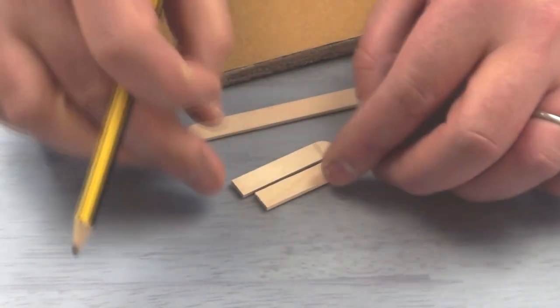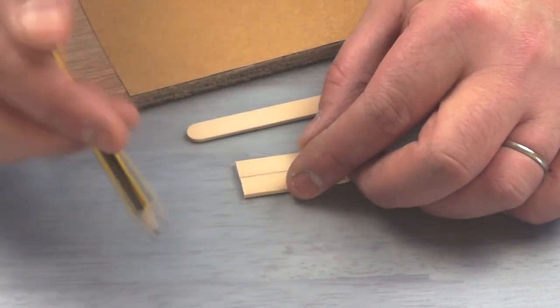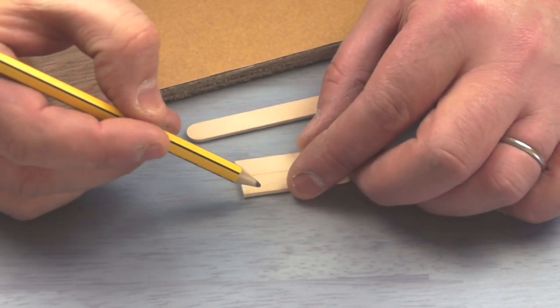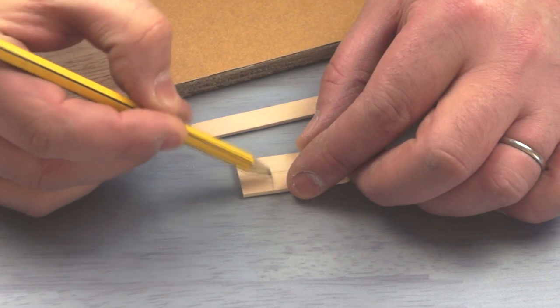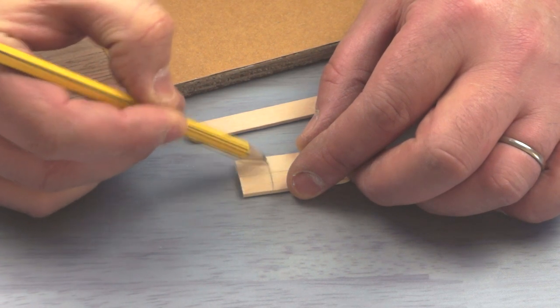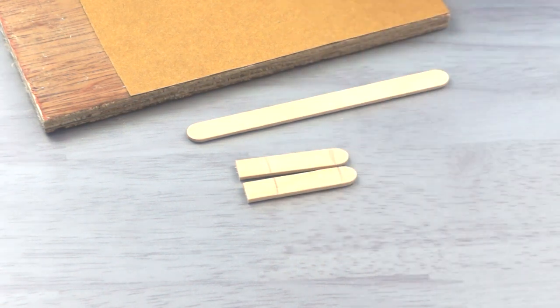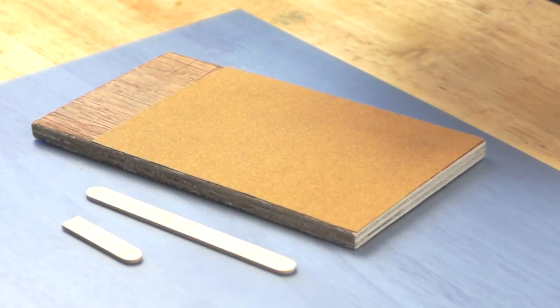And then, on the other end, I measured back, probably about just over half an inch, 15mm. And again, drew another line. It was then a case of just sanding a chamfer on the end.